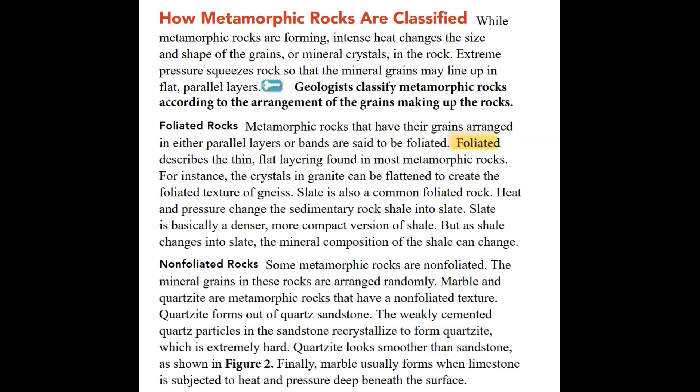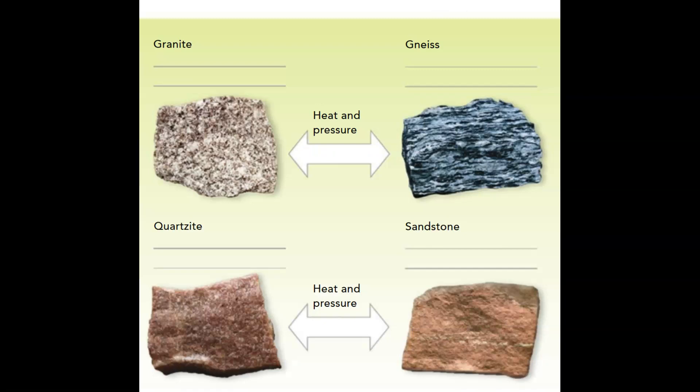Some metamorphic rocks are non-foliated — the mineral grains in these rocks are arranged randomly. Marble and quartzite are metamorphic rocks with a non-foliated texture. Quartzite forms out of quartz sandstone; the weakly cemented quartz particles recrystallize to form quartzite, which is extremely hard and looks smoother than sandstone. Marble usually forms when limestone is subjected to heat and pressure deep beneath the surface. Great heat and pressure can change one type of rock into another.